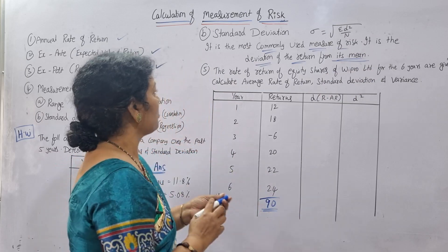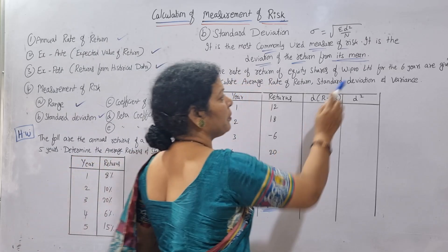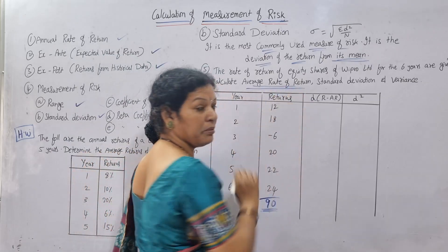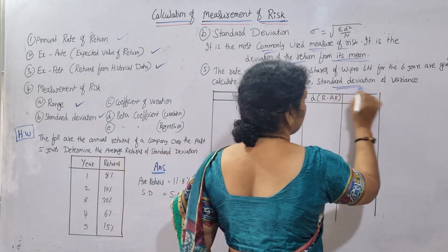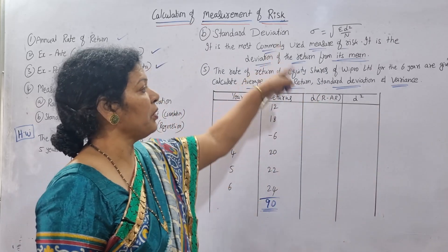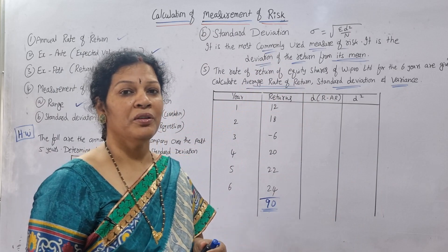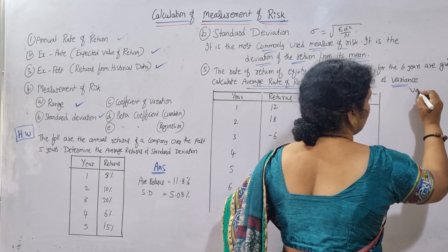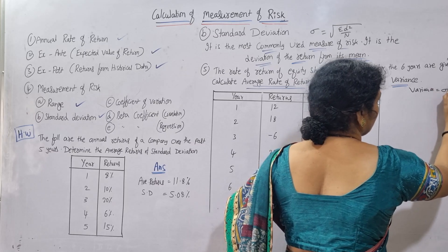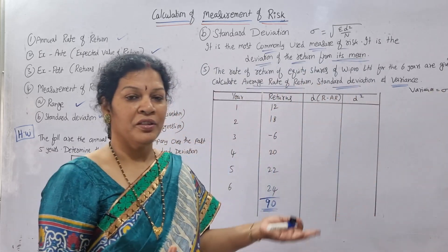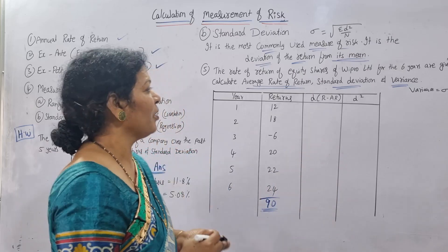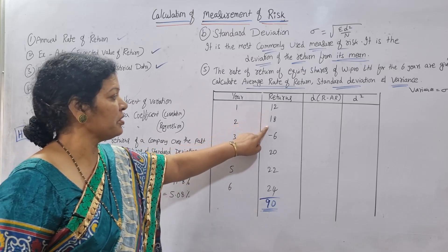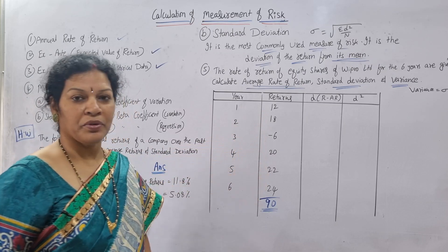Through a problem we will understand. The problem: the rate of return of equity shares of Wipro Limited for the past six years is given below. Calculate: (1) average rate of return, which means arithmetic mean; (2) standard deviation; and (3) variance. The returns for the six years are: 12%, 18%, -6%, 20%, 22%, and 24%.